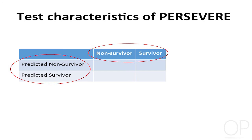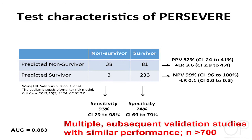Nonetheless, you can generate a two-by-two contingency table by categorizing all high and intermediate risk patients as predicted non-survivors, and low risk as predicted survivors. In the initial test, the model showed pretty good performance characteristics with an AUC approaching 0.8. These models require testing, and we've done multiple subsequent validation studies with very similar performance across a variety of patients — well over 700 patients now.